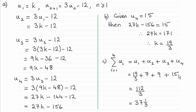So it's just a question of adding those four terms together giving an exact numerical value, and it can be either 112 over 3 or 37 and a third.